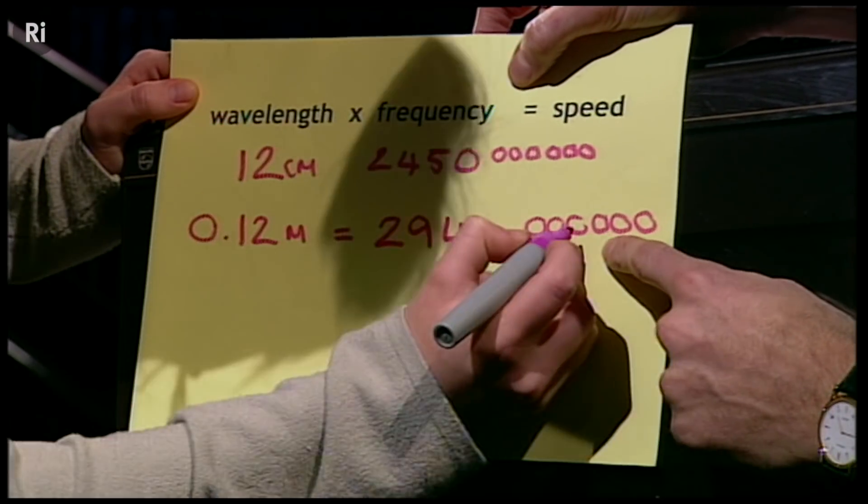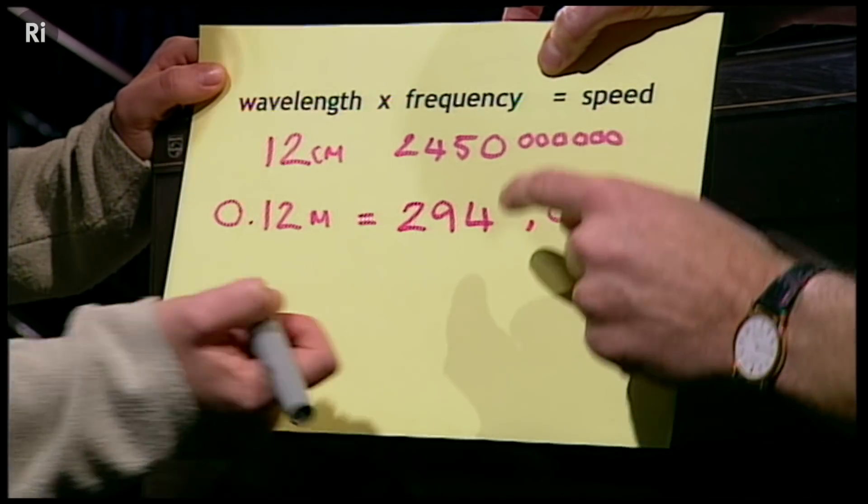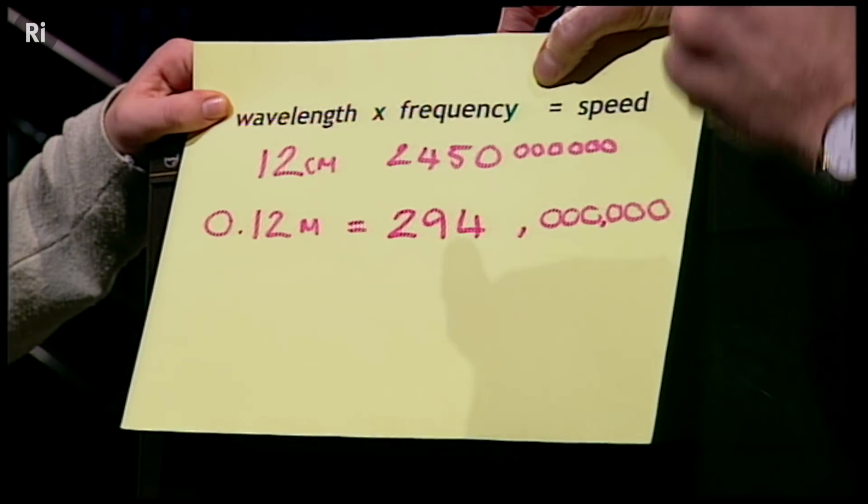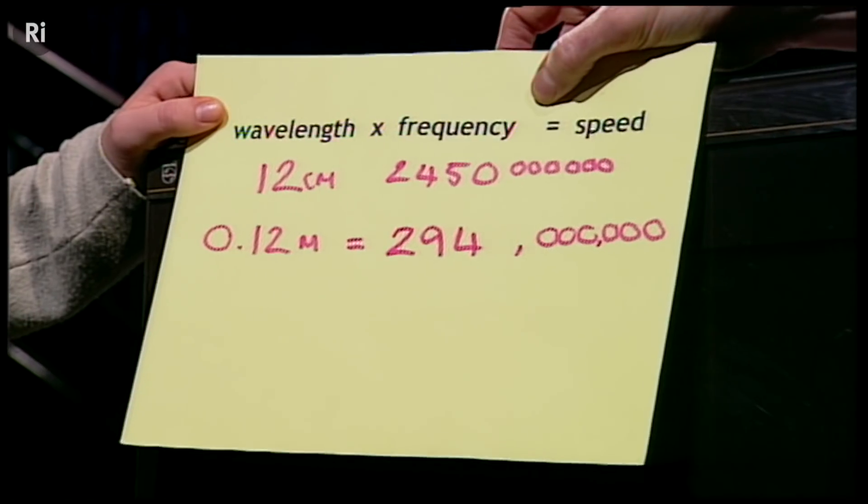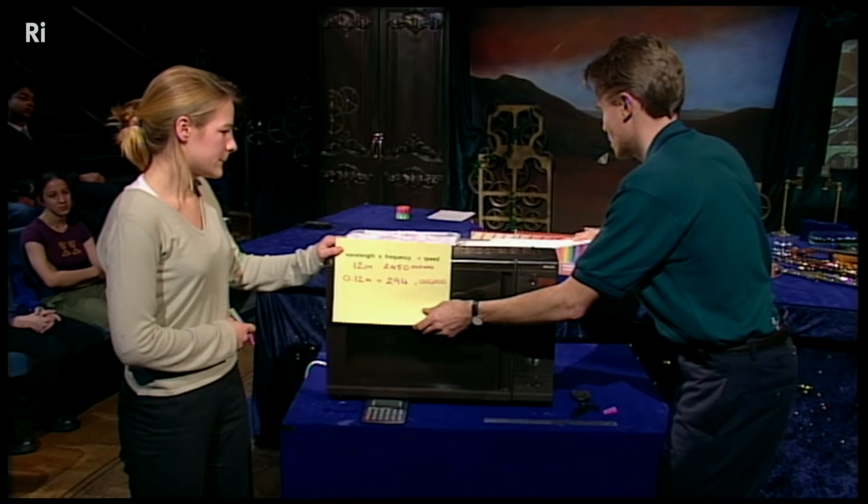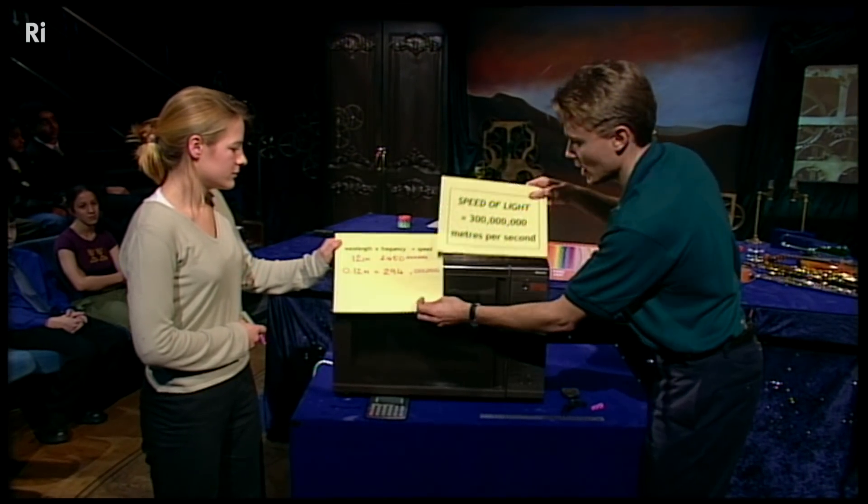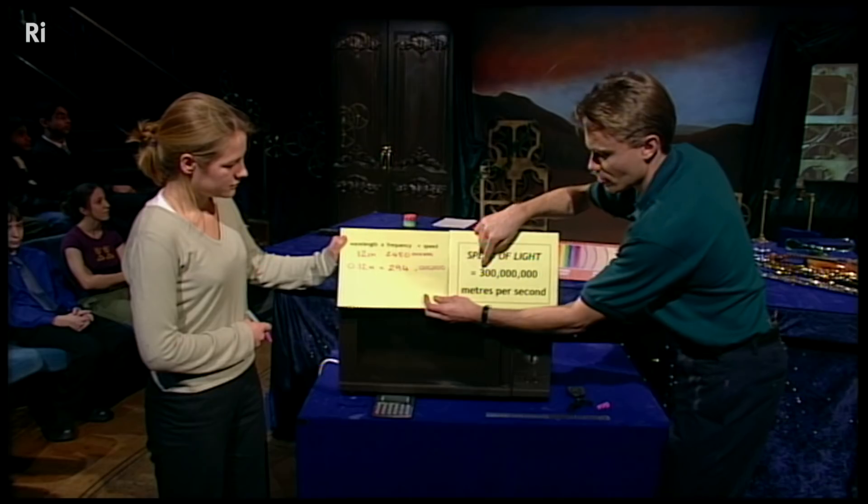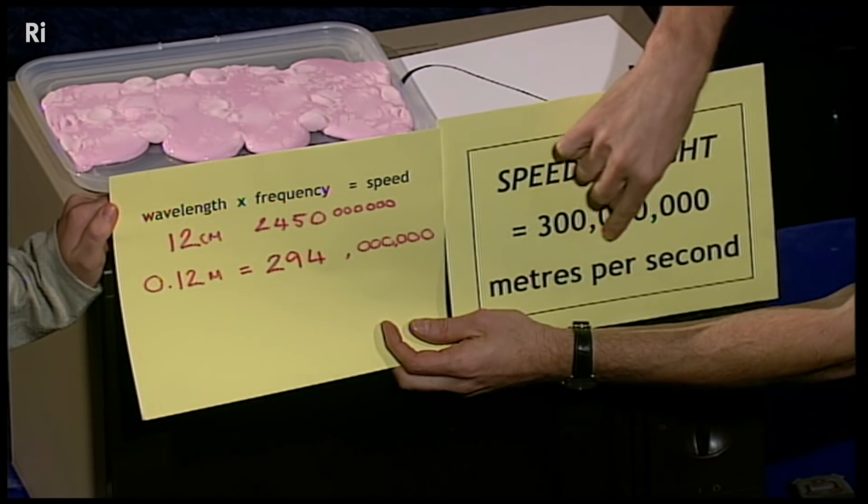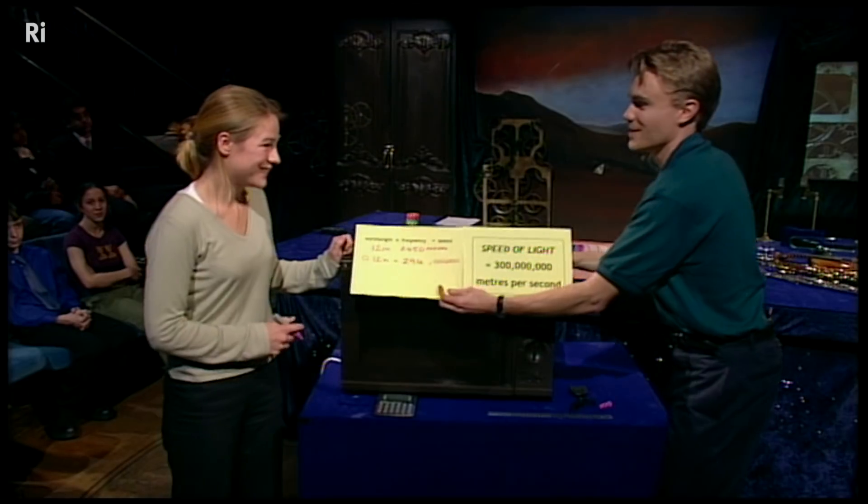So let's put in some commas here, because I can never read these things with all those zeros. There we go. So what we've got is 294 million metres per second. And here we have the number that physicists use for the speed of light. And it is 300 million metres per second. So you've measured the speed of light. Thank you very much, Helen.